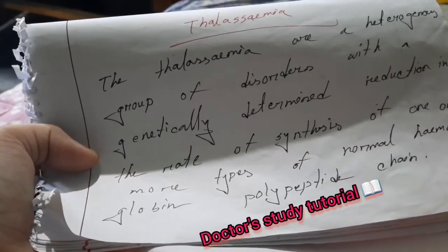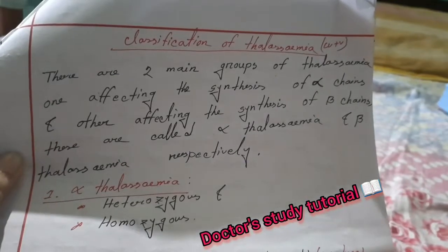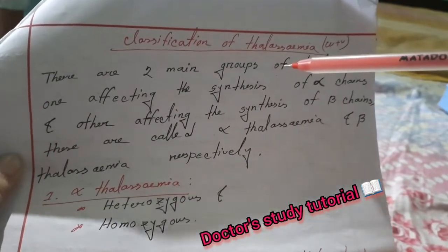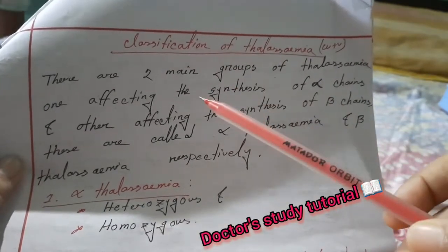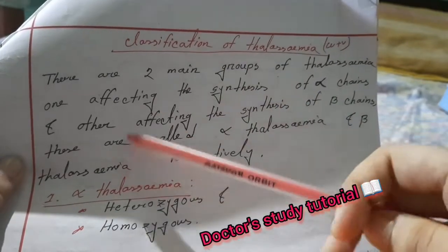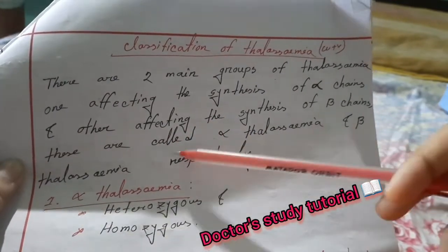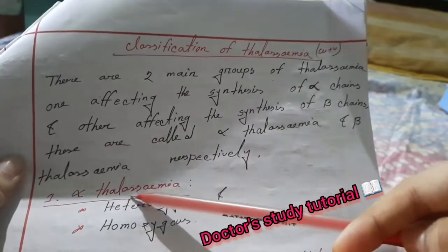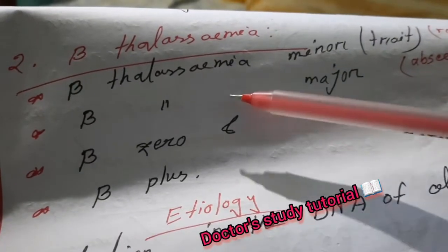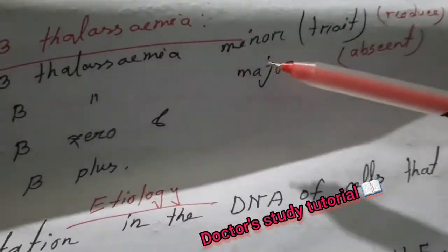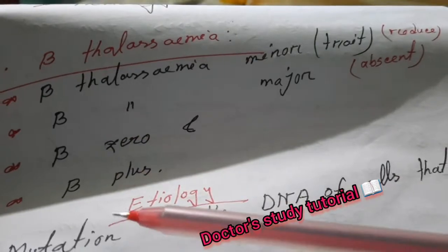The classification of thalassemia is a very important exam question. There are two main groups: one affecting the synthesis of the alpha chain (alpha thalassemia) and the other affecting the synthesis of the beta chain (beta thalassemia). In alpha thalassemia there are heterozygous and homozygous forms. Beta thalassemia is divided into beta thalassemia minor, intermedia, and beta thalassemia major, as well as beta-0 and beta-plus subtypes.